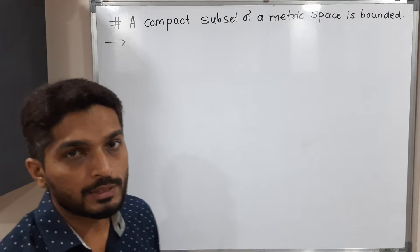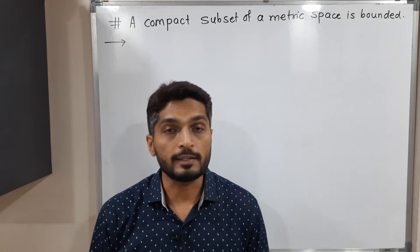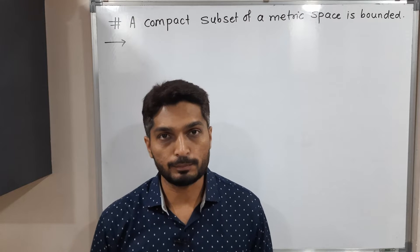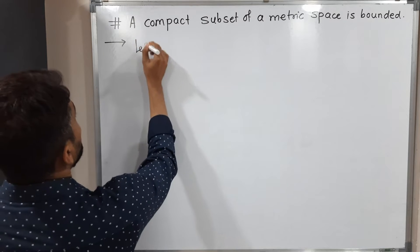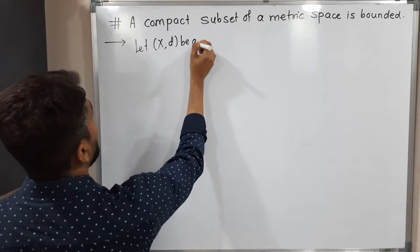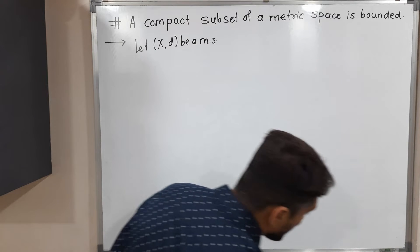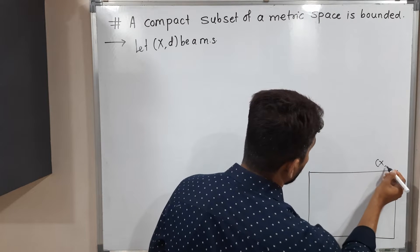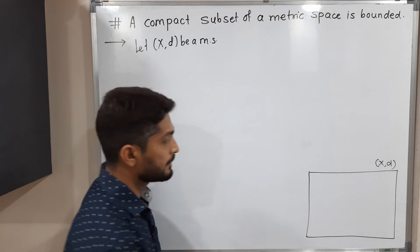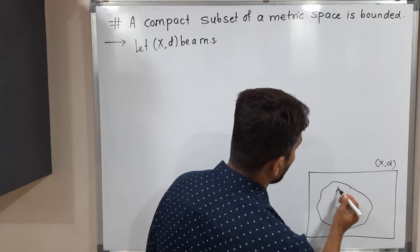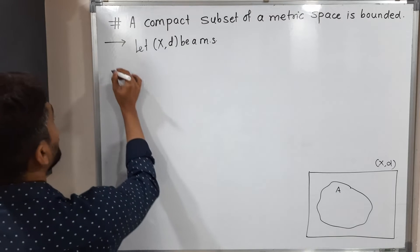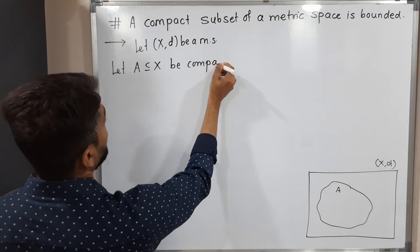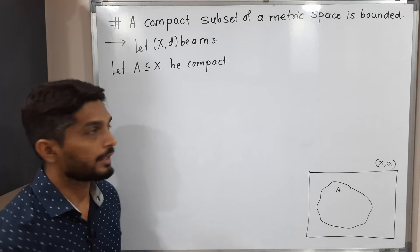In this video we are going to discuss the proof of this result: if you have a compact subset of any metric space, then it is bounded. So let X, D be a metric space. We are considering one subset of X — let A be a subset of X which is compact — and we have to prove that A is bounded.